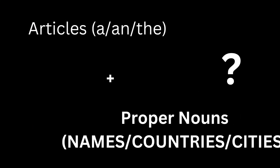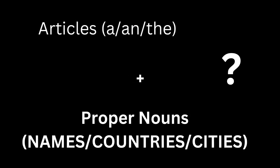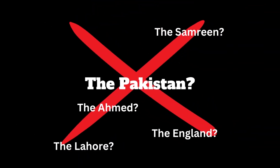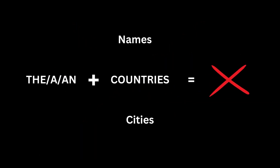Hi everyone. Here's another tip about the most common mistake made by those speaking English as a second language, especially in our country — and that is using the article 'the' with a proper noun, especially a name. You never use the article 'the' with a name.